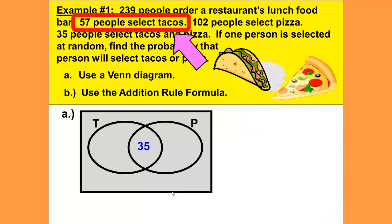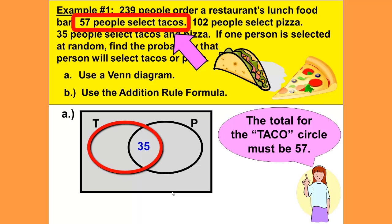57 people select tacos, so the total for the taco circle must be 57. We already have 35 in the overlap, so 57 minus 35 gives us 22. 22 plus 35 gives us the total of 57. We have 35 in the overlap and a total of 57 in the taco circle.